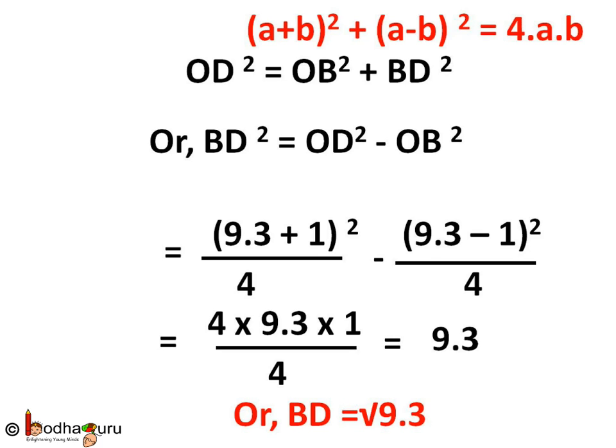We know (a plus b) squared plus (a minus b) squared is equal to 4ab. So applying that rule, we will get the solution as (4 times 9.3 times 1) by 4. So this 4 and 4 gets cancelled, which is equal to 9.3.